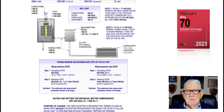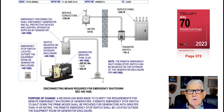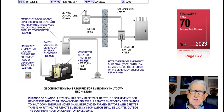This illustration deals with the disconnecting means required for emergency shutdown in accordance with NEC 445.19(B). The purpose of this change — paraphrasing — is to locate this disconnect for emergency shutdown of the generator.